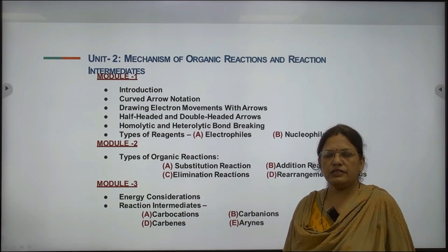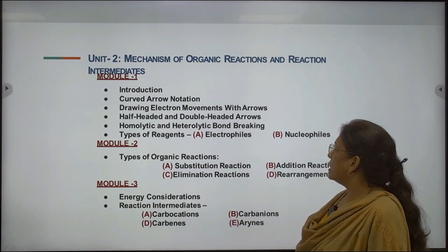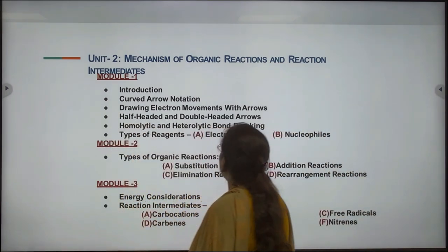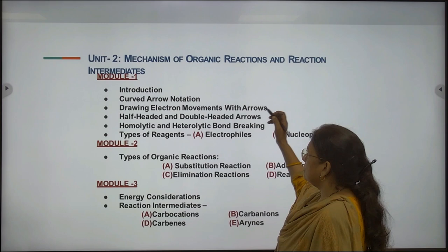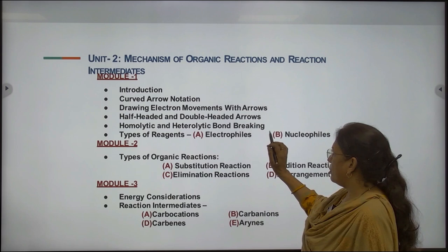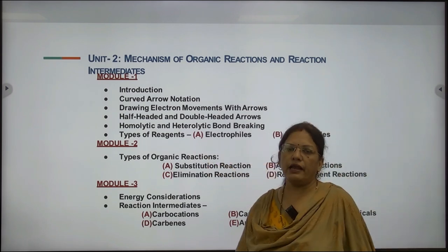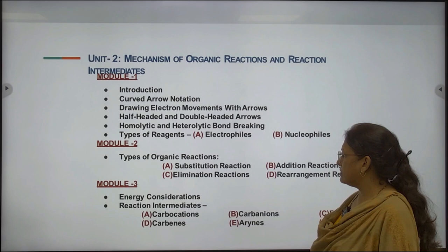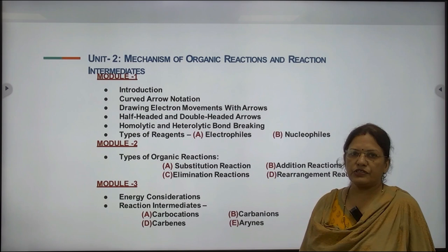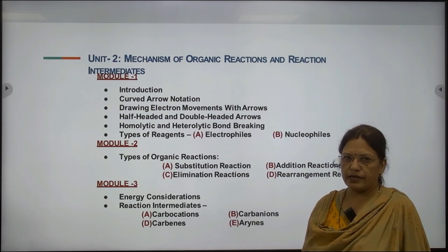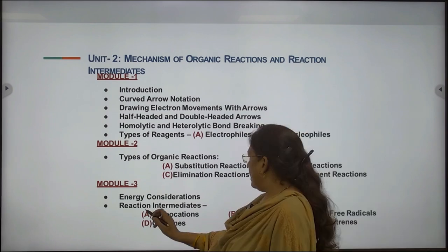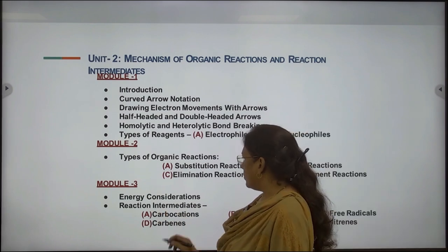In the last lectures we talked about curved arrow notation, drawing electron movement with arrows, half-headed and double-headed arrows, homolytic and heterolytic bond breakings and types of reagents like electrophiles and nucleophiles, types of organic reactions: substitution reactions, addition reactions, elimination reactions and rearrangement reactions. Today we will be starting with Reaction Intermediates, Module 3.